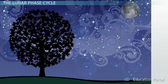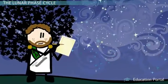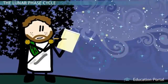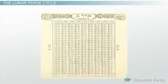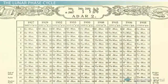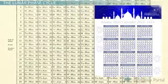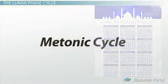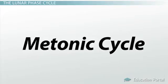It is believed that the lunar phase cycle may have been observed and kept track of as far back as 30,000 years ago. Even today, the lunar phase cycle is still used by the traditional Jewish and Islamic calendars. This lunar calendar, as well as something known as the Metonic Cycle, will be the subject of our lesson.